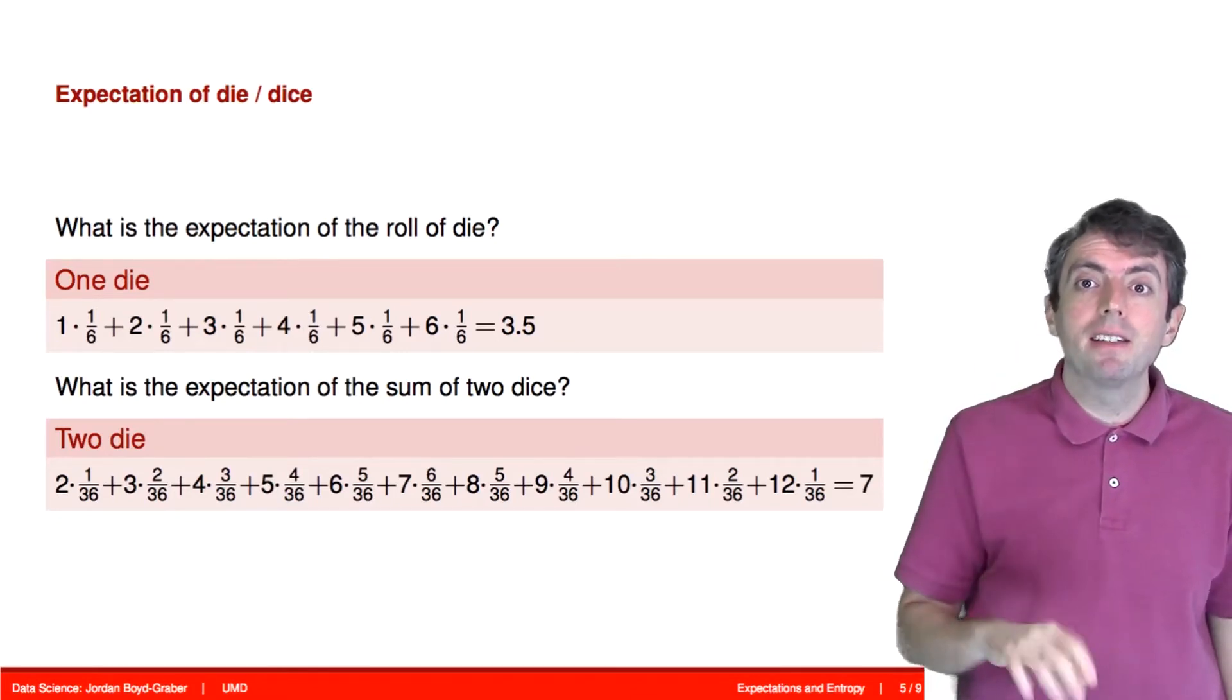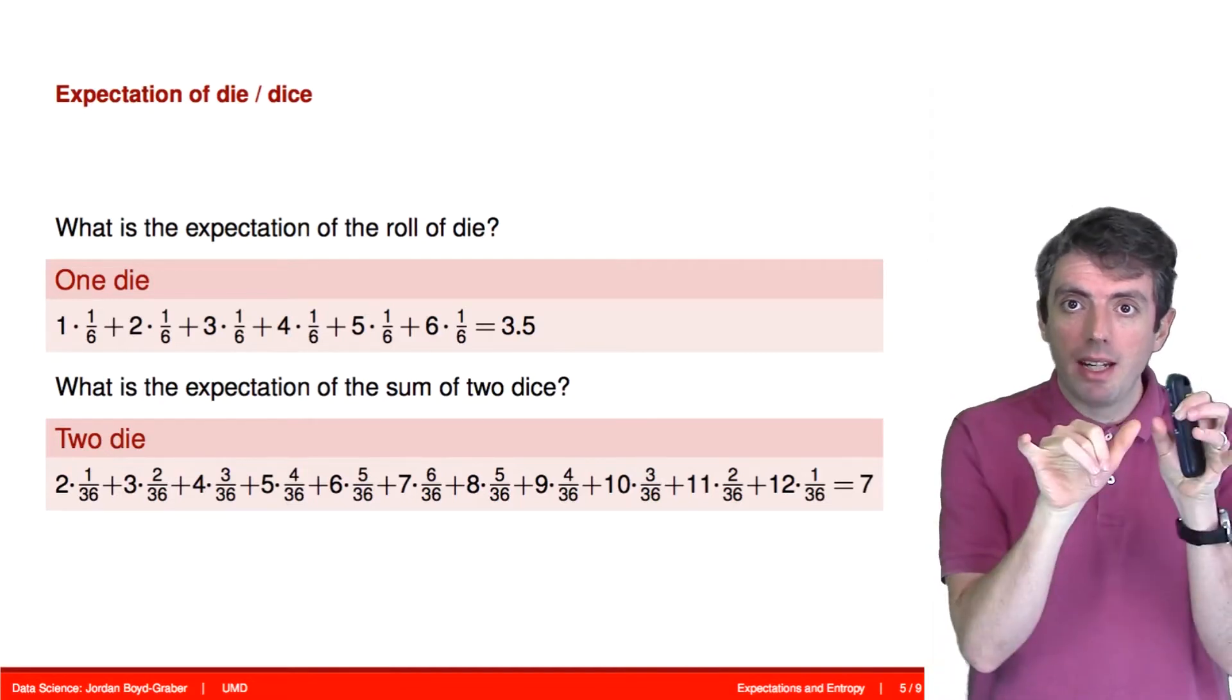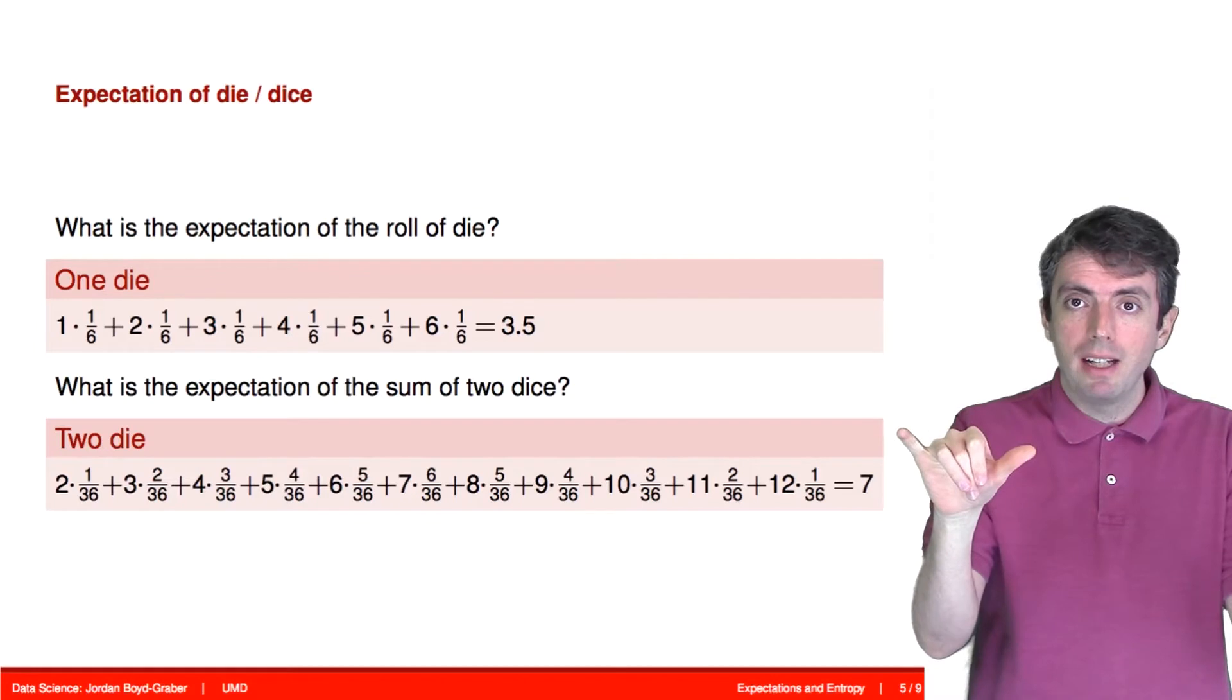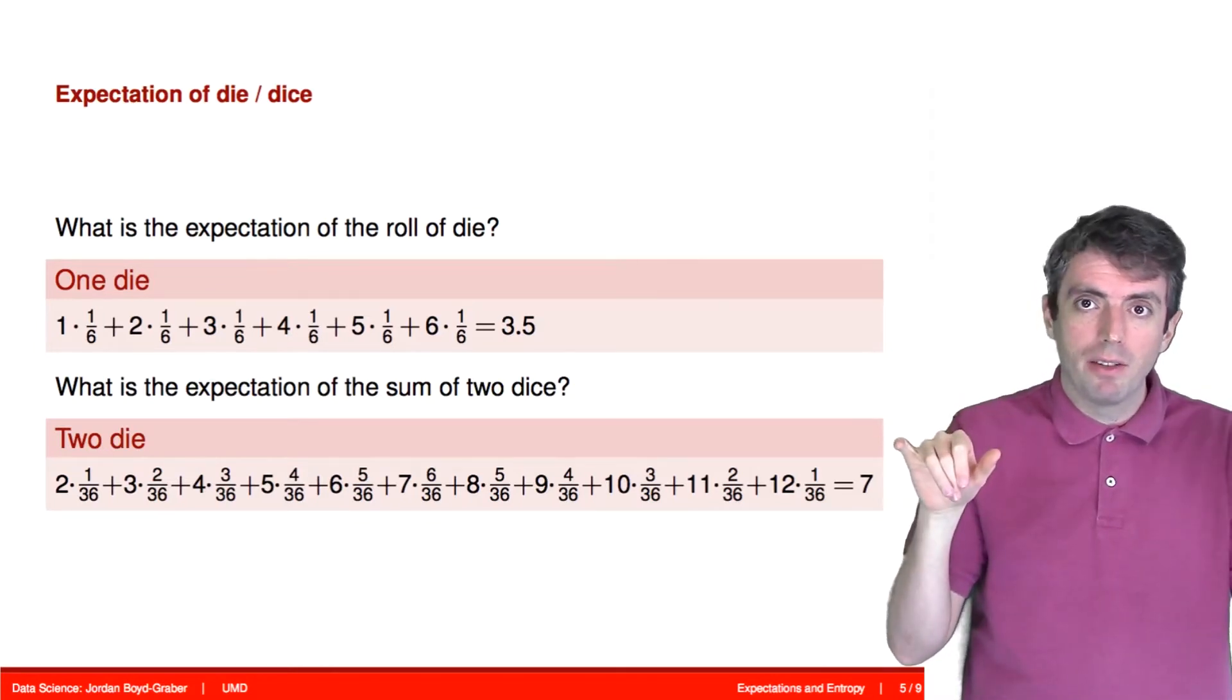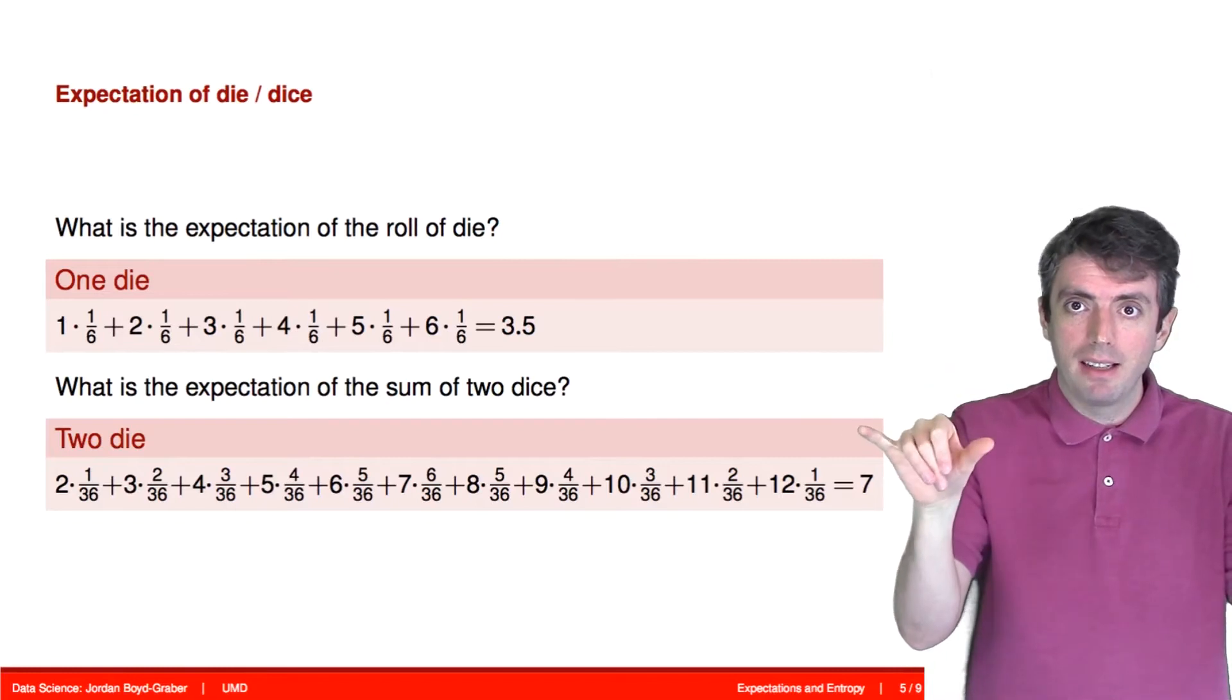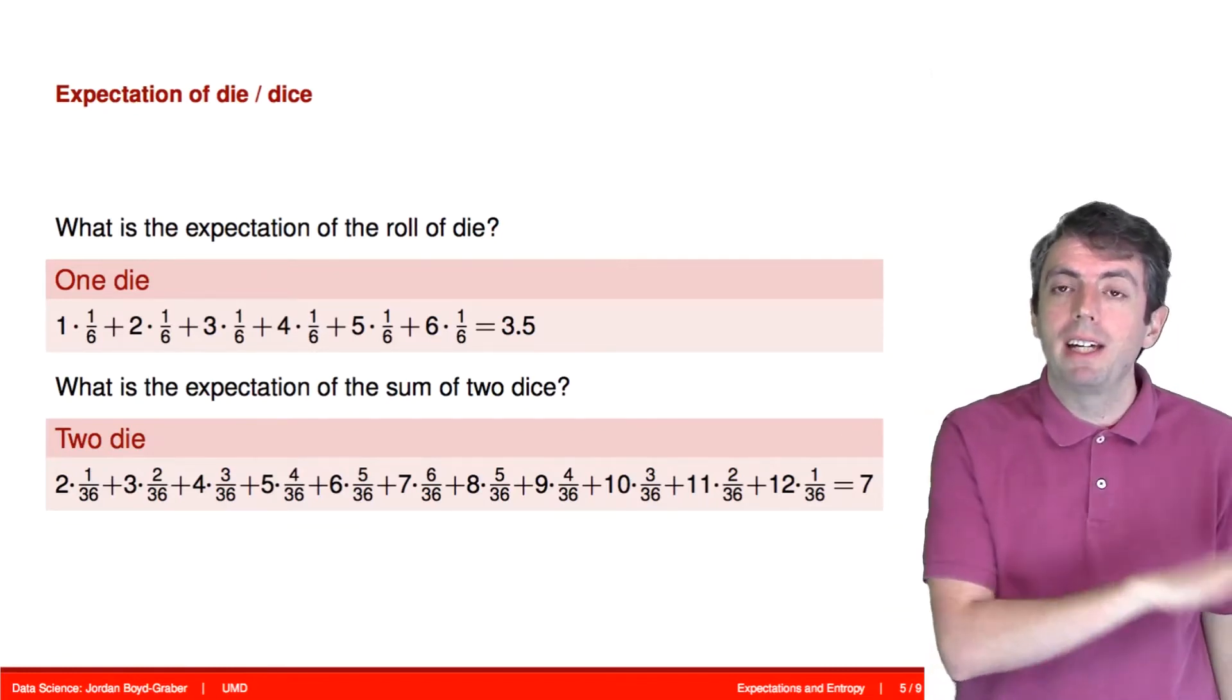This makes sense because these two outcomes are independent. And so we could have broken out those two expectations into the expectation of the first roll and the expectation of the second roll, added them together. But if you do it the more complicated way, it also works out.